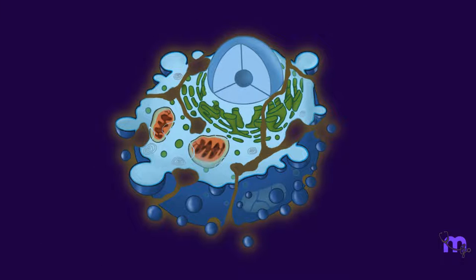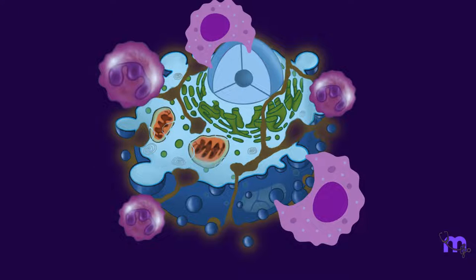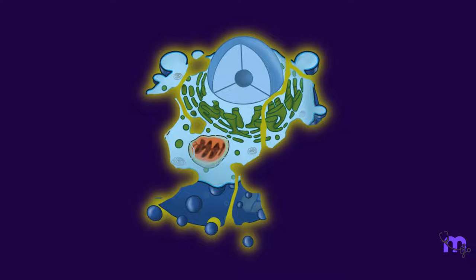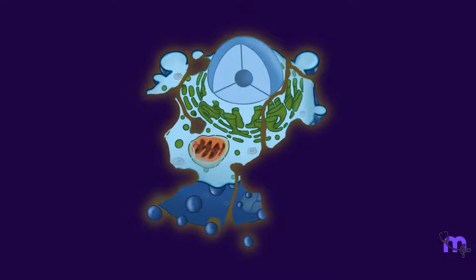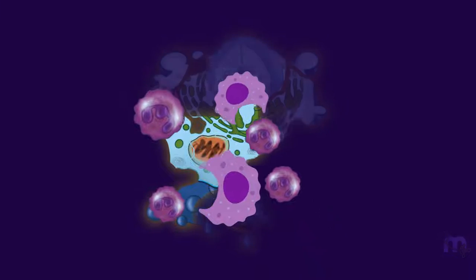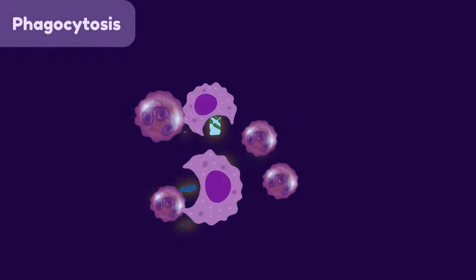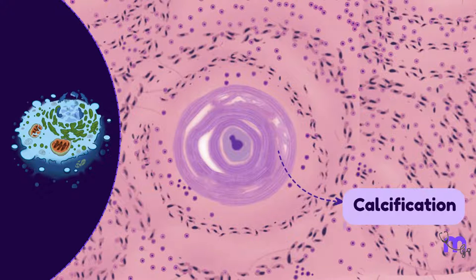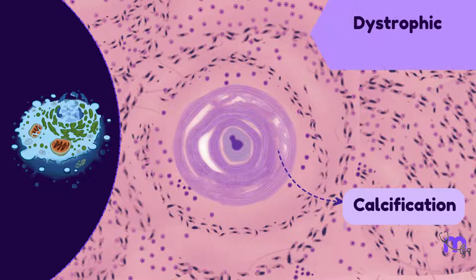As the cell crumbles on itself, the contents released elicit an inflammatory reaction. The enzymes from the dying cell or the inflammatory cells may completely digest the cell. Or, more often, the hungry neutrophils and macrophages come into the picture and gobble up the debris in a process called phagocytosis. Sometimes these dead cells are replaced by calcification, known as dystrophic calcification, which we will learn about in further sessions.